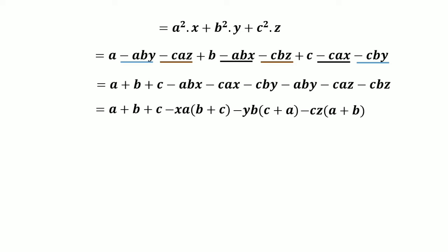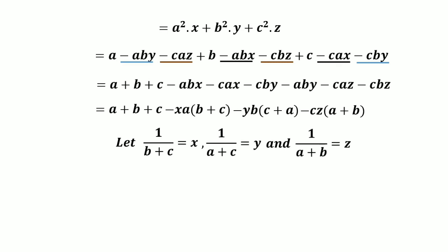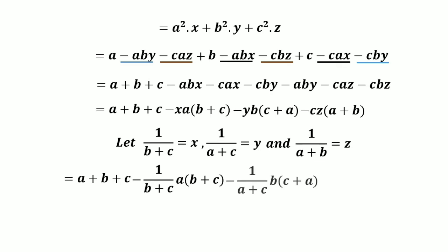We now re-substitute the values of x, y, and z. So we have: (a plus b plus c) minus x, which equals 1 divided by (b plus c), times a times (b plus c); minus y, which equals 1 divided by (a plus c), times b times (c plus a); minus z, which equals 1 divided by (a plus b), times c times (a plus b). We then cancel the common terms.